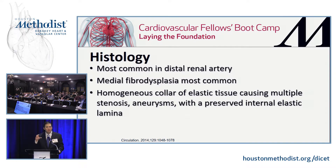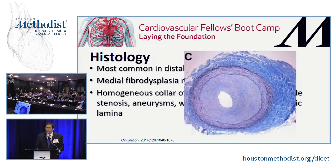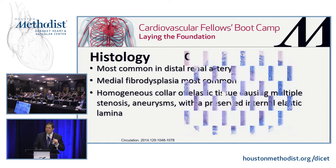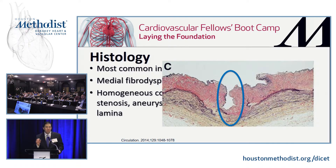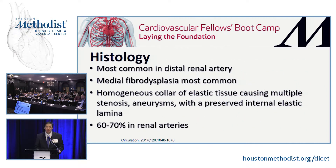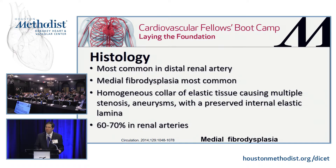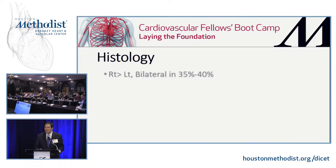The internal elastic lamella is preserved, so it appears to be a hyperplasia of the media. Areas of thickening alternate with spared areas in cross-section — this intermittent thickening produces the characteristic appearance. About 60 to 70% of cases involve the renal arteries. The right side is more common than the left, and less than one-third to 40% are bilateral, so there is asymmetry — this is not a global manifestation.